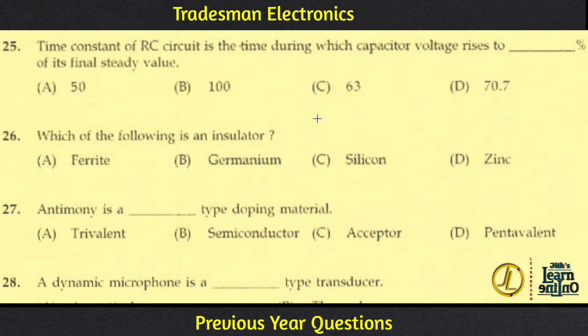The time constant of an RC circuit is the time during which the capacitor voltage rises to a certain percentage of its final steady state value. One RC circuit is defined as one time constant.